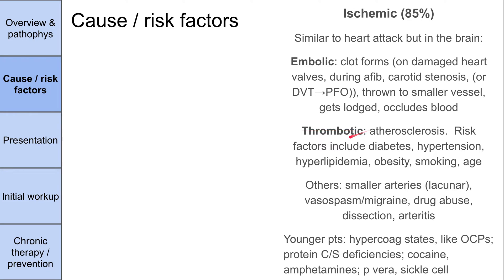For thrombotic strokes, the risk factors are all associated with atherosclerosis — the same risk factors that lead to atherosclerosis in the heart — including type 2 diabetes, hypertension, hyperlipidemia, obesity, smoking, and age. There are other kinds of ischemic strokes, less prominent than embolic and thrombotic. These include lacunar strokes in smaller arteries, vasospasms similar to migraine pathophysiology, drug abuse, aortic dissections, and arteritis.